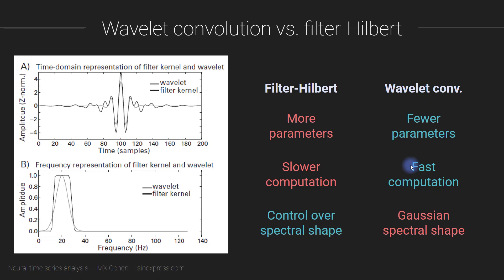Wavelet convolution is also faster because you're just doing a couple of FFTs. It's one FFT of the data, one FFT per wavelet frequency, and one inverse FFT per wavelet frequency. The filter-Hilbert method is slower, in part because the filtering takes longer and in part because the Hilbert transform itself involves several FFTs. So the computation time is longer.